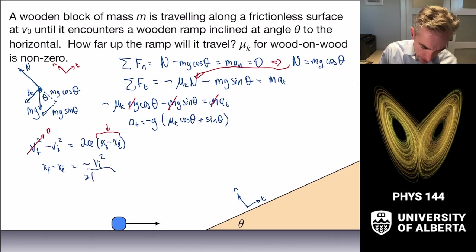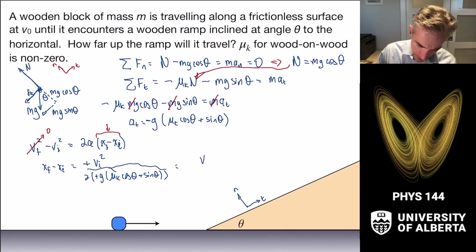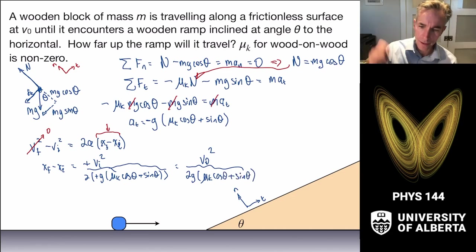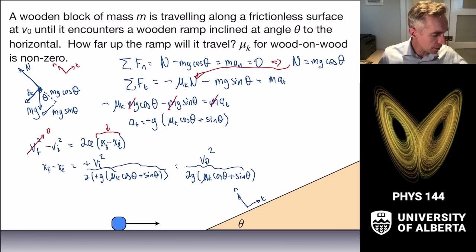Canceling the negative signs, we get that the distance traveled up the ramp is v₀² over 2g times (μ_k cos θ + sin θ). We have figured out how far up the ramp it goes.